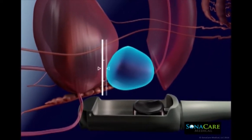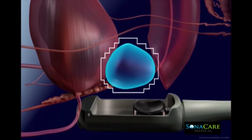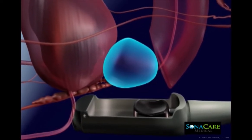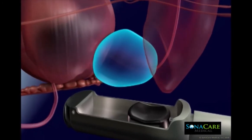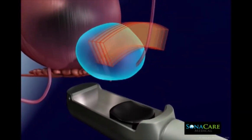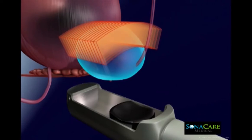In preparation for ablation planning, the Sonoblate imaging transducer maps the morphology of the prostate gland in real time. This allows the physician to create a customized plan for the procedure.